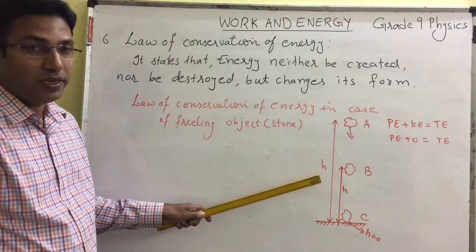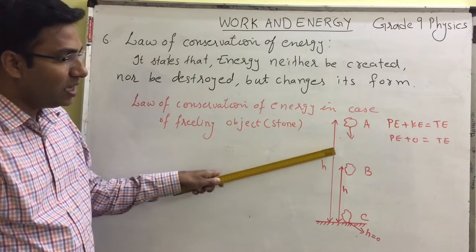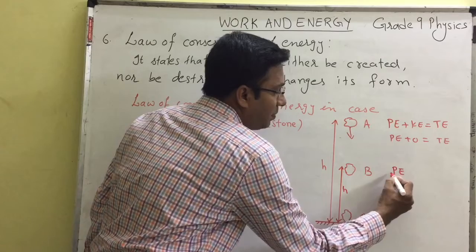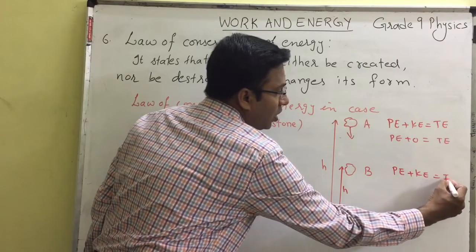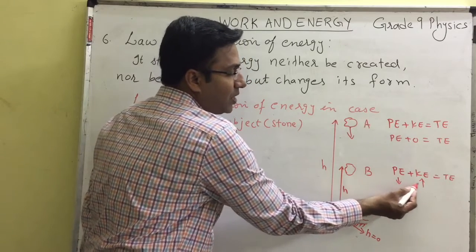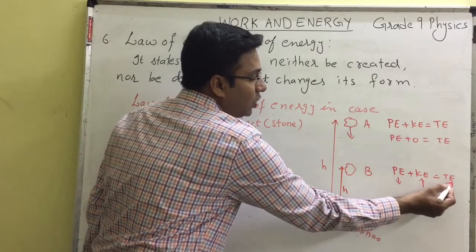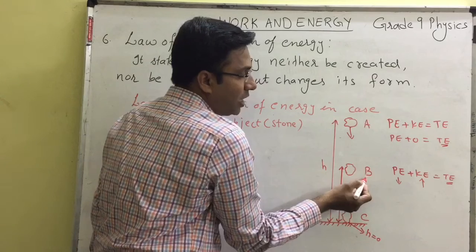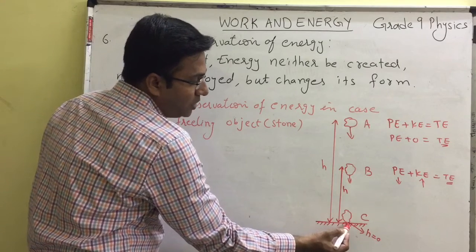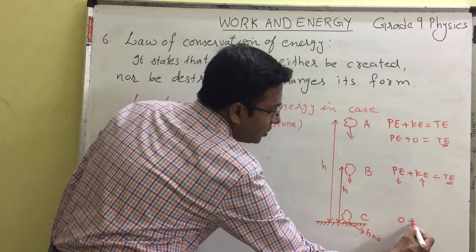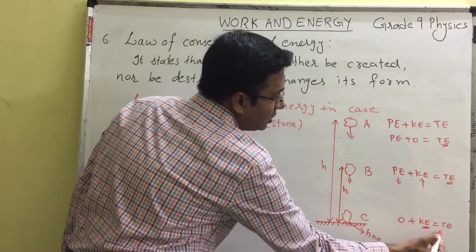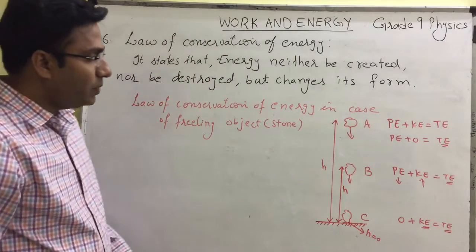Now consider the object moving downward. As it is moving, the object will have kinetic energy as well, but potential energy will be decreasing because height is decreasing. At point B, the object has both potential energy and kinetic energy, but the total energy remains the same. Potential energy is decreasing because height is decreasing; kinetic energy is increasing because velocity is increasing. Total energy at A and total energy at B remain constant. Finally, the object reaches the ground at point C, where height is zero, so potential energy will be zero and it will have maximum kinetic energy as velocity is maximum.